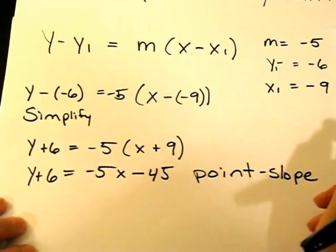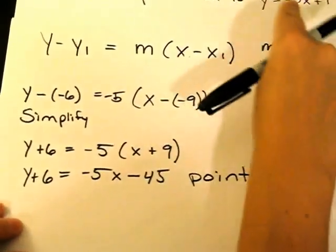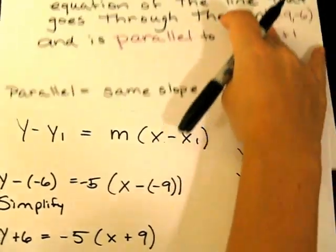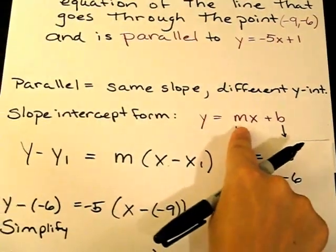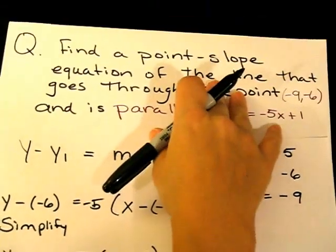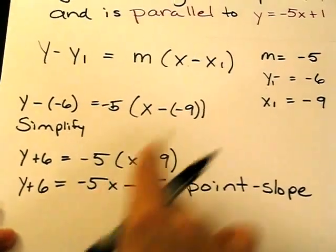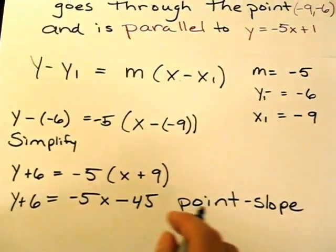Some questions will ask you to go back to the given form, which is the slope-intercept form, the y = mx + b form. If you are asked to do that, you can subtract the 6 from both sides and you'll get that form, the y = mx + b.